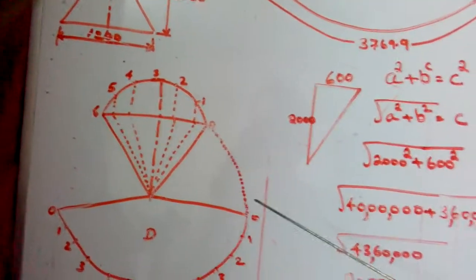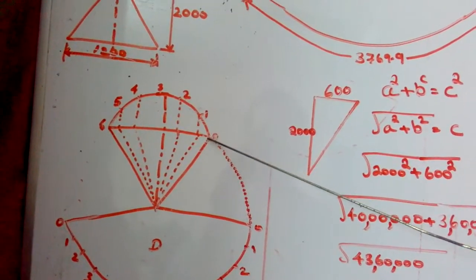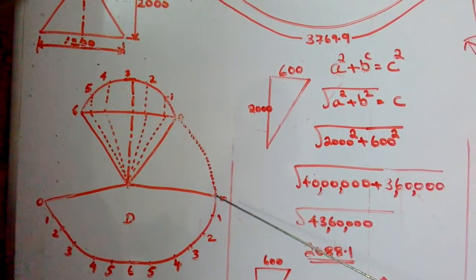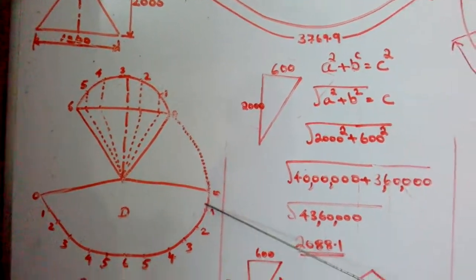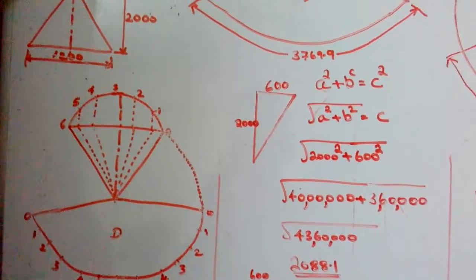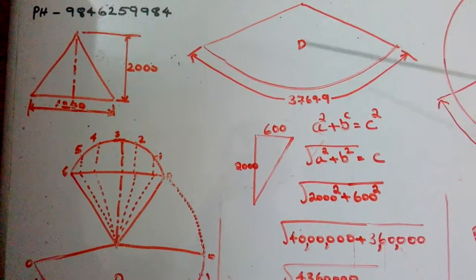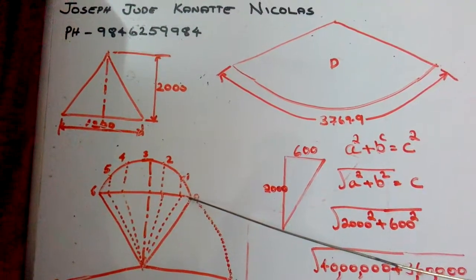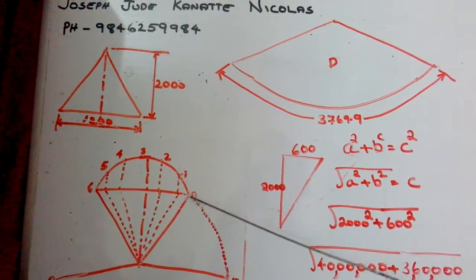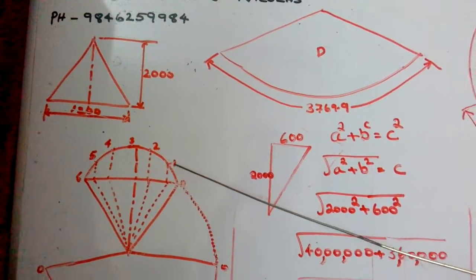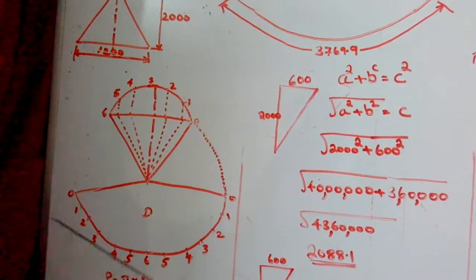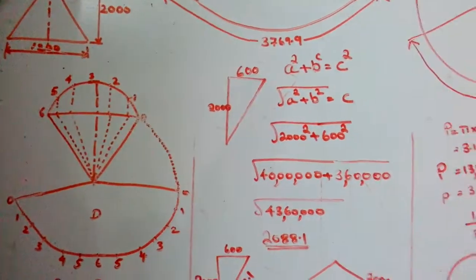First we tried to make this distance — we took it in a compass and measured from point to point — but it had inaccuracy. Afterwards, instead of taking a straight measurement, we took the curved length and started to mark from 0 to 1, 1 to 2, and continued. There also we had inaccuracy.